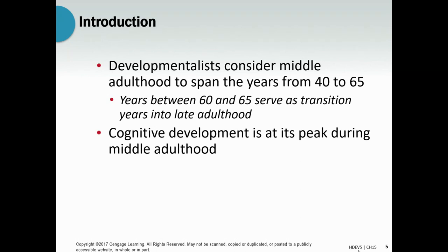During middle adulthood, cognitive development is at its peak and physical development is starting to go down significantly. You don't feel it all at once, but little by little over the decades it goes down in a pretty normal way for most people.